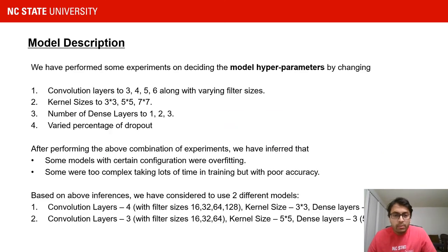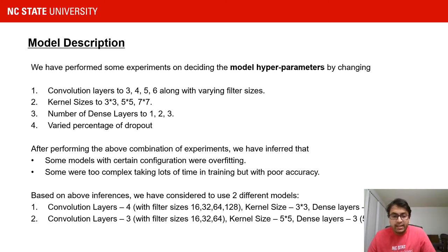We performed some experiments to tune the model and get the best hyperparameters. We varied the number of convolution layers, the kernel sizes for convolution, the number of dense layers, the dropout percentage, and so on. Some of our models were overfitting and some were giving us low accuracy. We shortlisted about two models: one with four convolution layers and a 3x3 kernel size, and another with three convolution layers and a 5x5 kernel size.